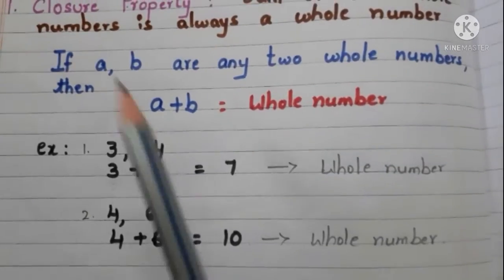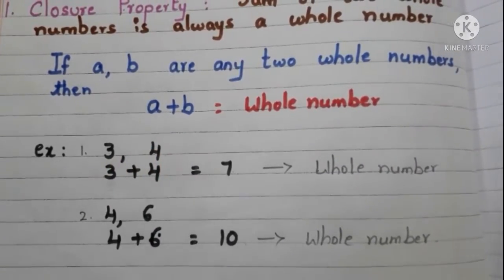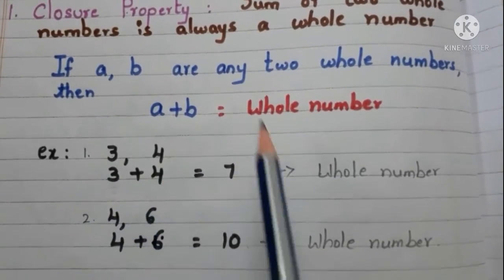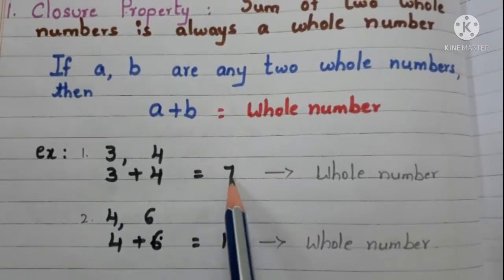Take any two whole numbers. Here I am taking 3 and 4. Now add them. 3 plus 4 is how much? 7. And 7 is a whole number.